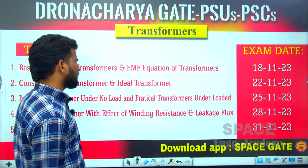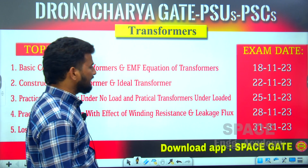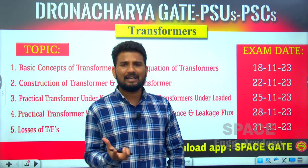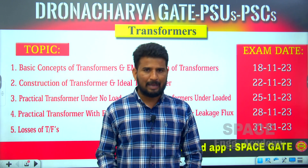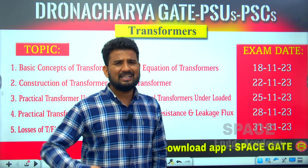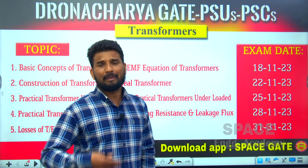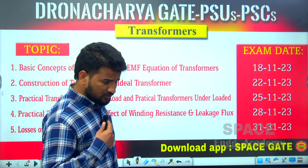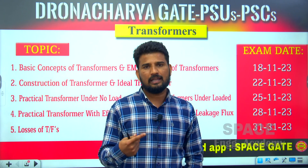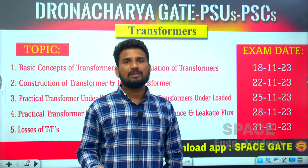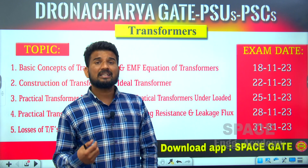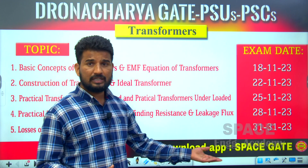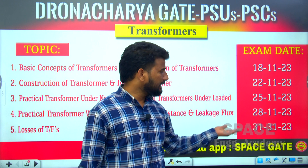The next exam on 28th November covers practical transformers with the effect of winding resistance and leakage flux. When operating a transformer, you supply to the primary winding, and there is some leakage flux in the magnetic material core. Also, once you use a coil — whether primary or secondary — there is an effect of winding resistance. The impact of resistance and the importance of leakage flux will be examined on 28th November.